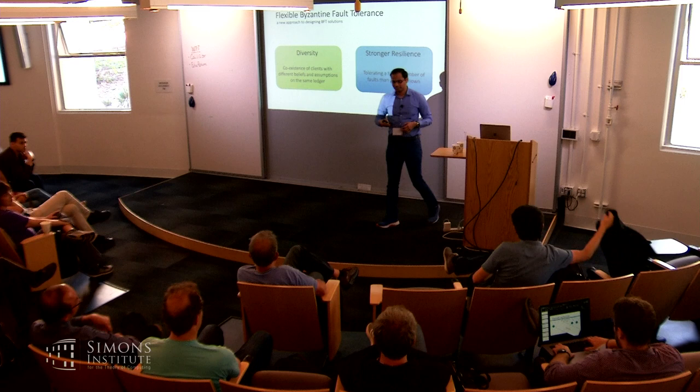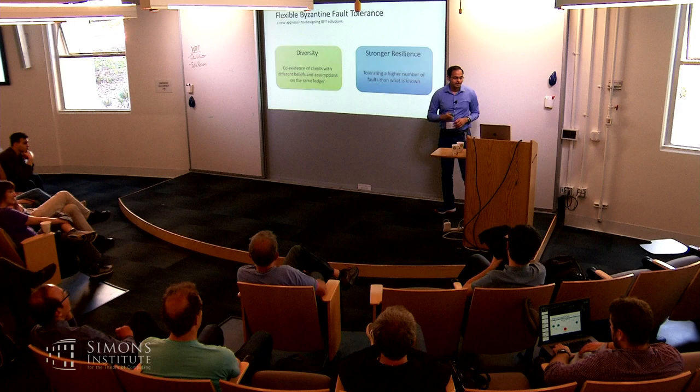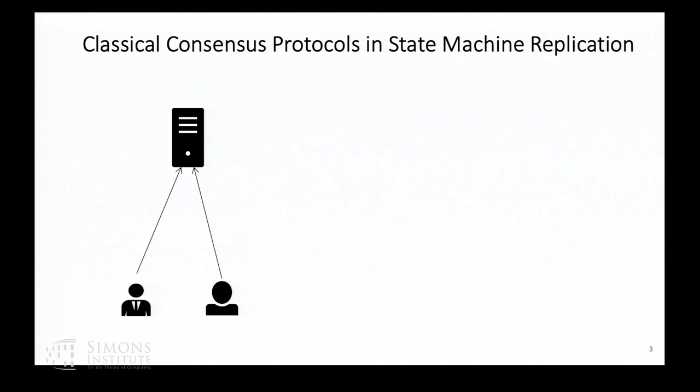Stronger resilience just means that we can tolerate a higher number of faults than what is known — and no, we are not breaking any lower bounds. We are thinking of a state machine replication system, and here is how I'll use a consensus protocol in such a system.